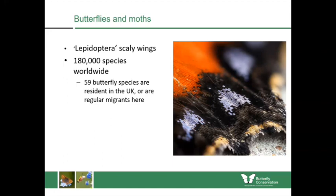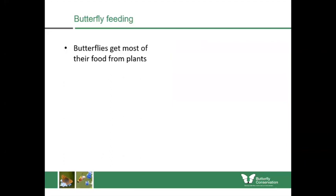There are around 180,000 known species worldwide, but in the UK we have 59 species of butterfly which are resident or regular migrants, and we have over two and a half thousand species of moth.